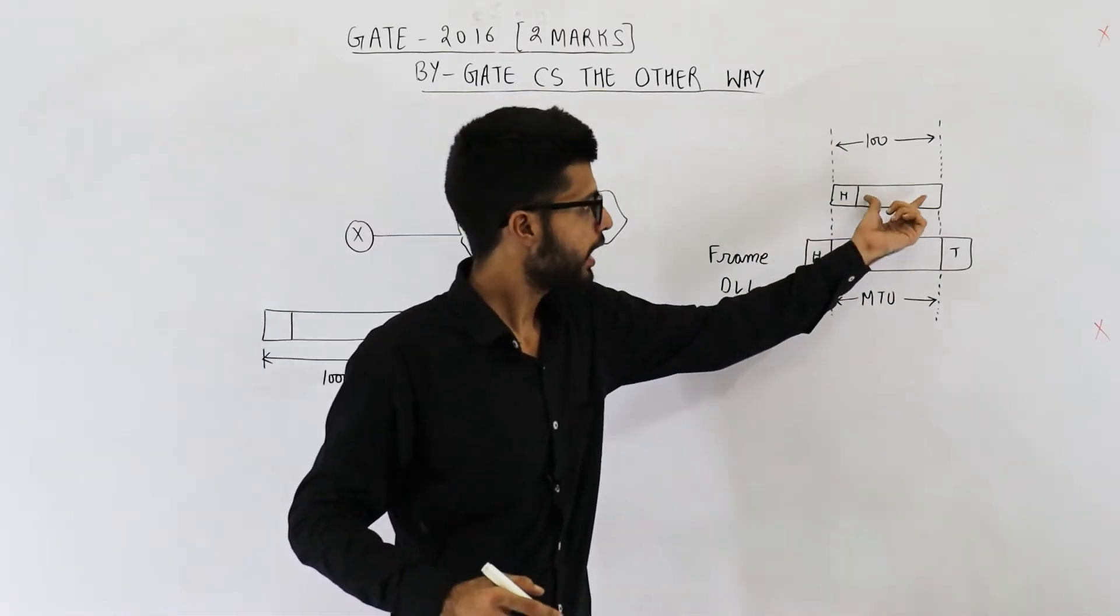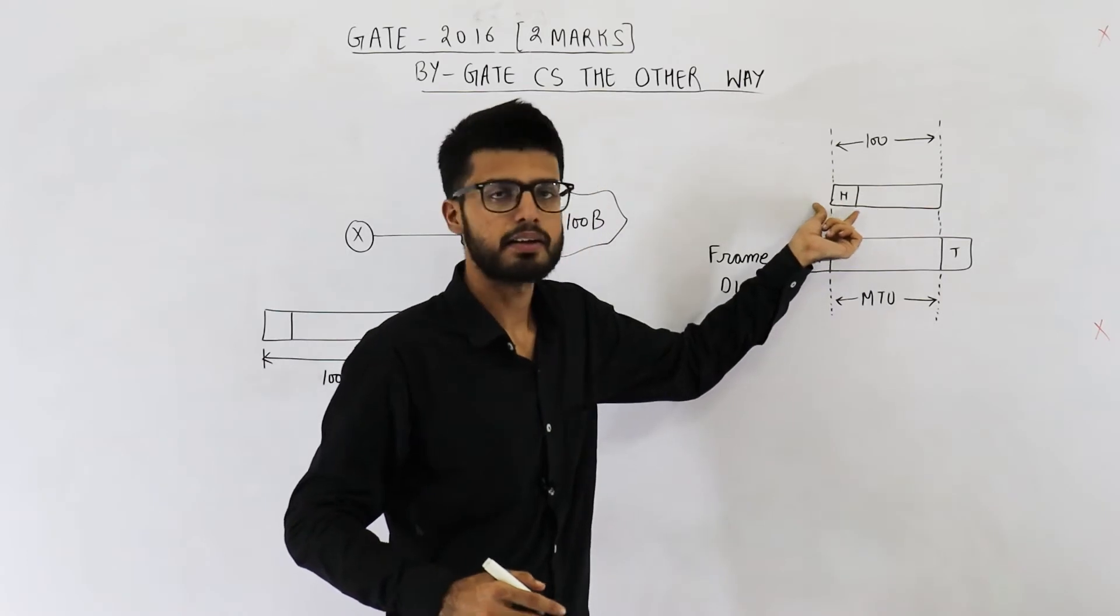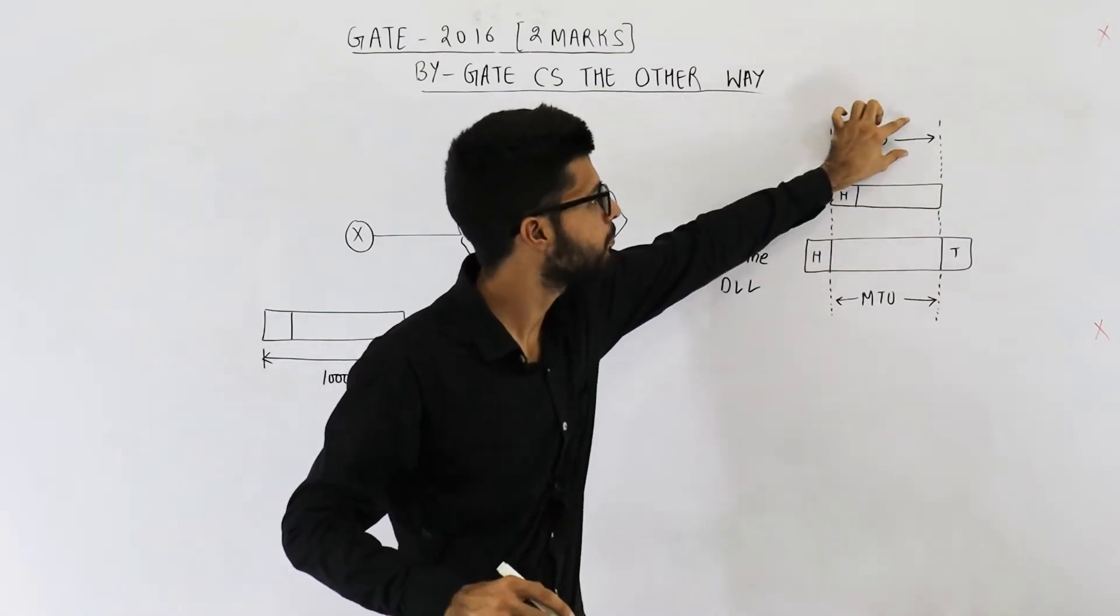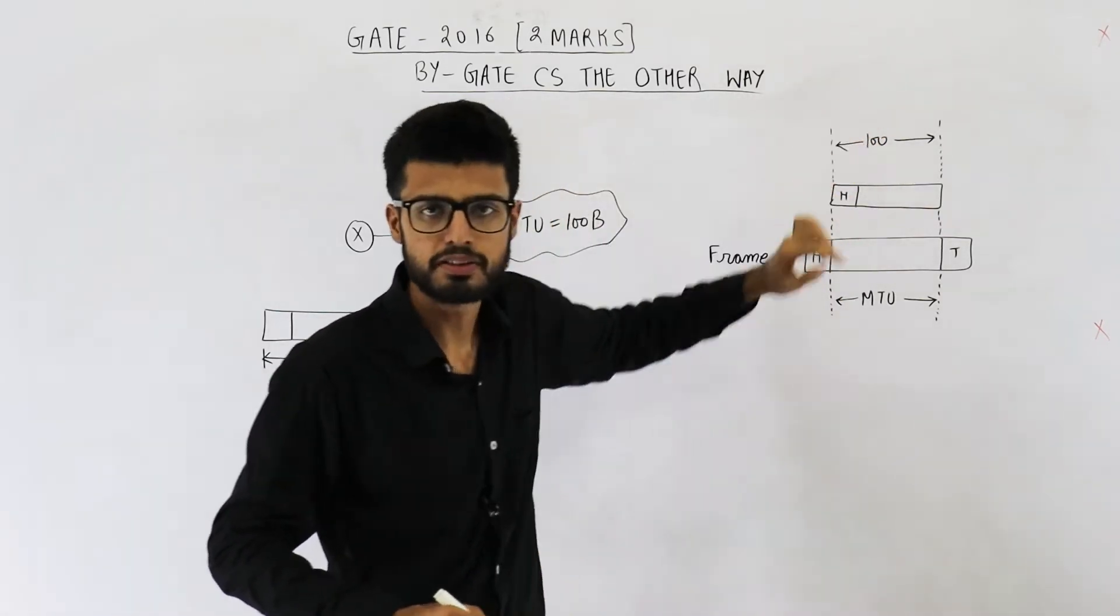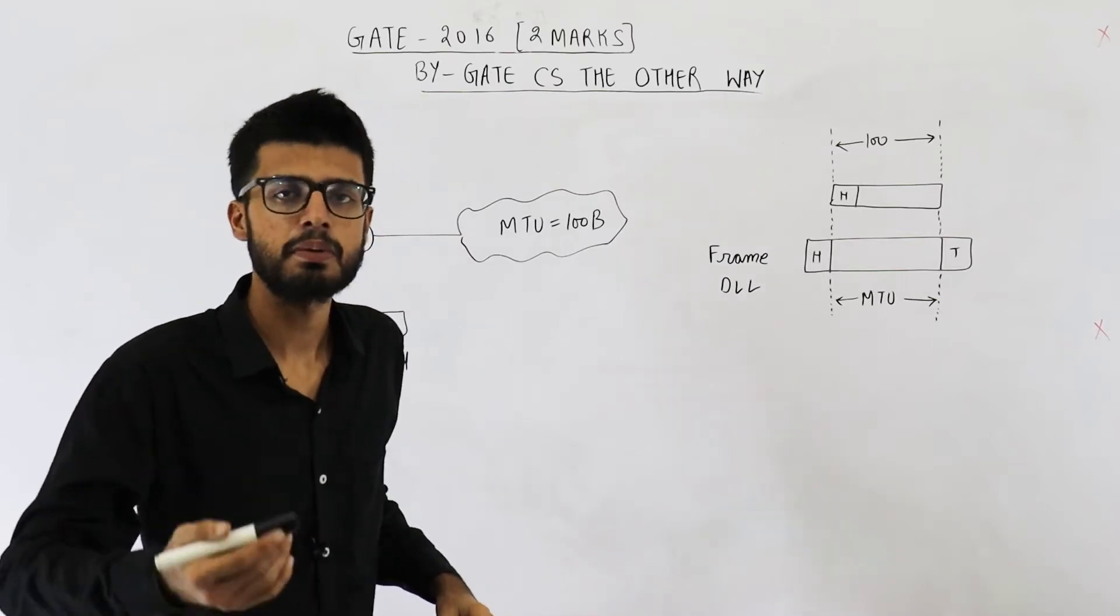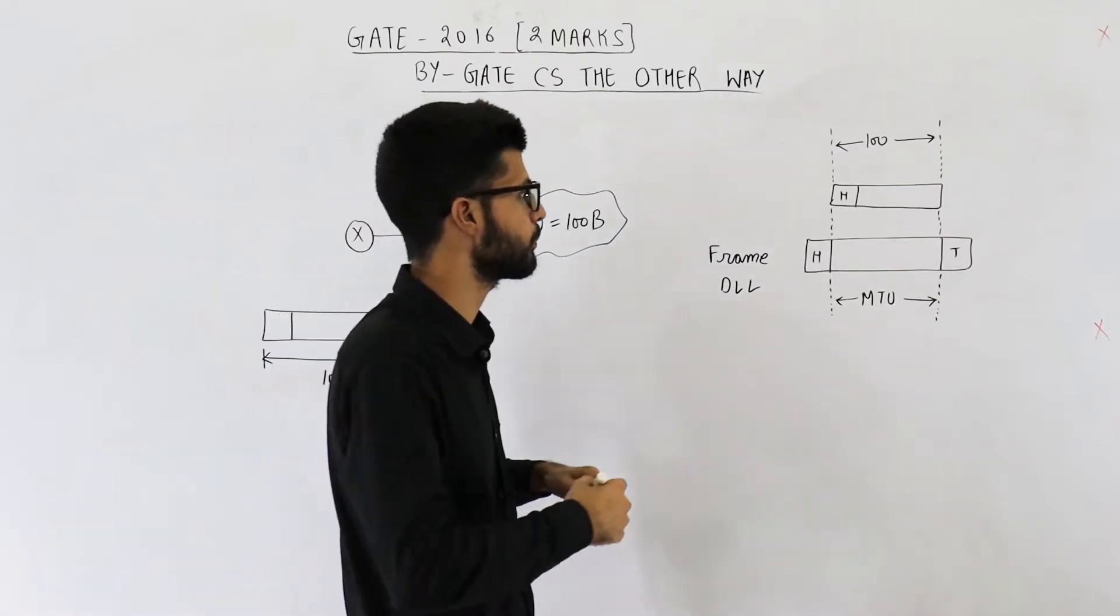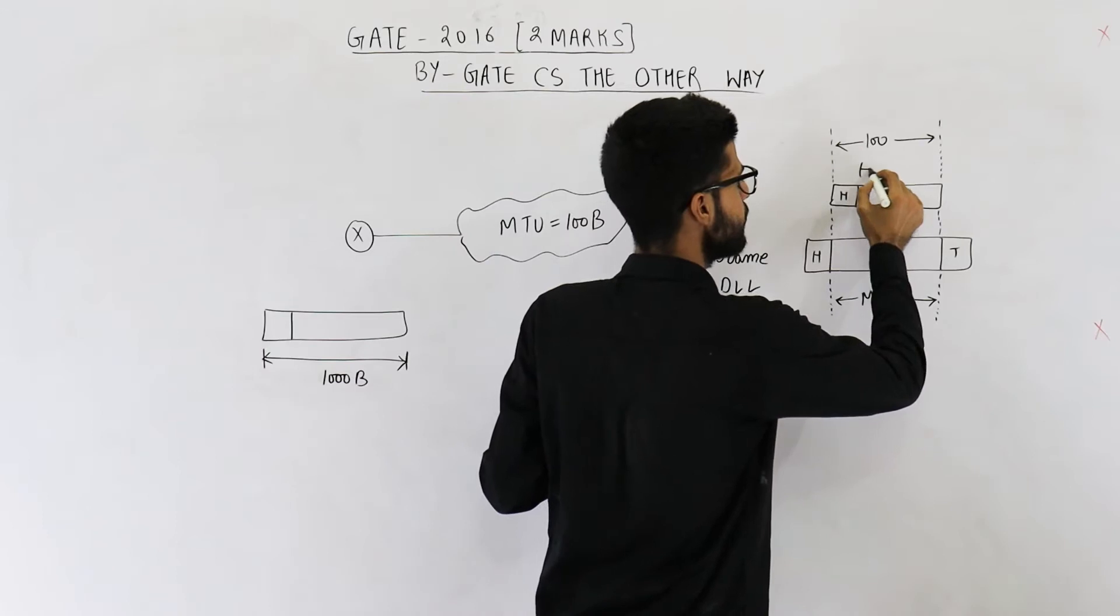So IP payload plus header present in one packet can be maximum of 100 bytes. So how much maximum data or maximum payload can be present? That will be 80. Because 20 bytes are taken by the header.